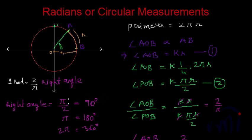This relation can be used while solving problems when angles are given in radians. Radians are also called circular measurements. So this is all about the measurement of angles and the units we use to measure them. In the next few videos, we are going to talk about the conversion from degrees to grades, or degrees to radians and vice versa. Keep watching MassMath — bye-bye till then.